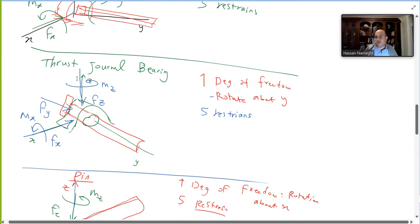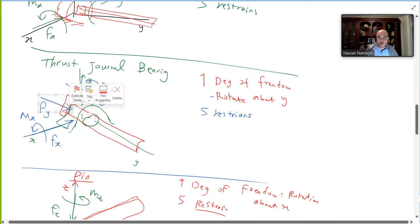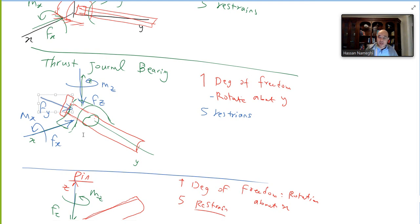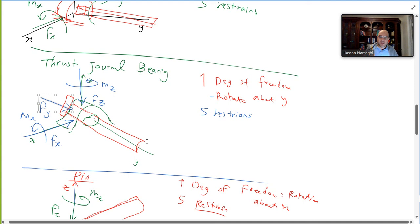The thrust journal bearing is the same as a regular journal bearing but has a collar on it, so the shaft cannot be pulled out axially. This adds a reaction force in y. You end up with three reaction forces and two reaction moments — six total degrees of restriction — with only one degree of freedom: rotation about the y-axis.